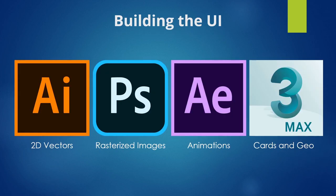In just about every UI element in my project, I start with 2D vectors in Adobe Illustrator, with additional drawn work in Adobe Photoshop. For animated elements, I use Adobe After Effects, which is great because you can bring in Illustrator vector layers and the After Effects file updates in real time when you change the Illustrator file. For actual 3D elements that UI is tied to, such as cards and curved surfaces, I model in 3ds Max and also optimize faces there.